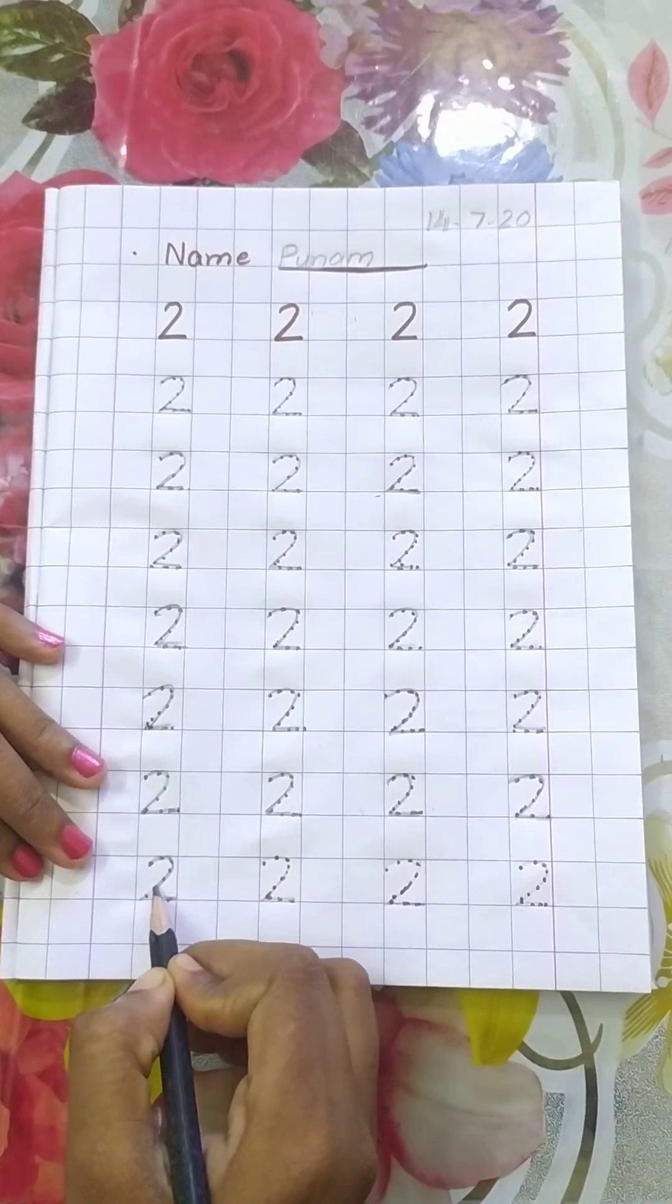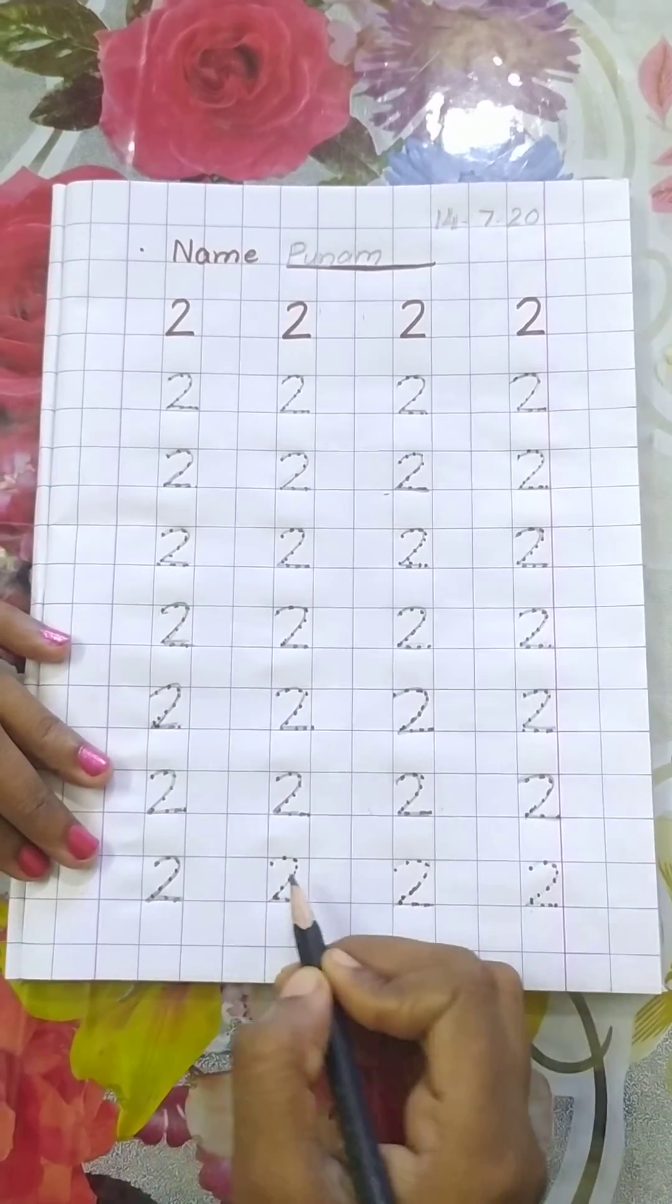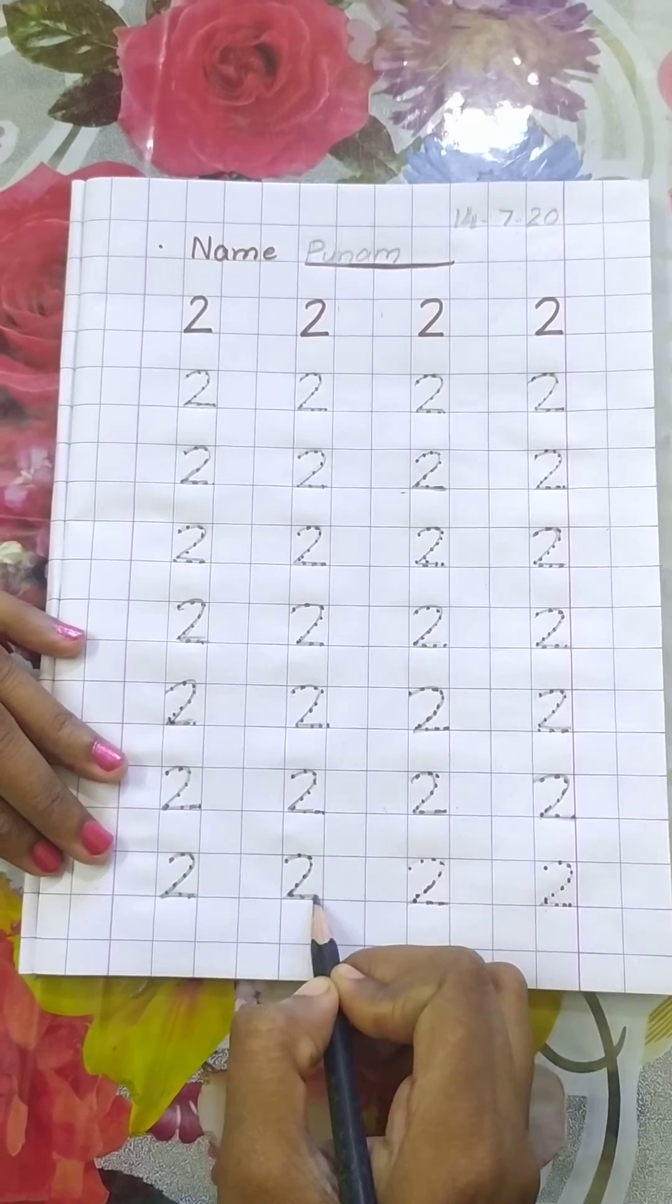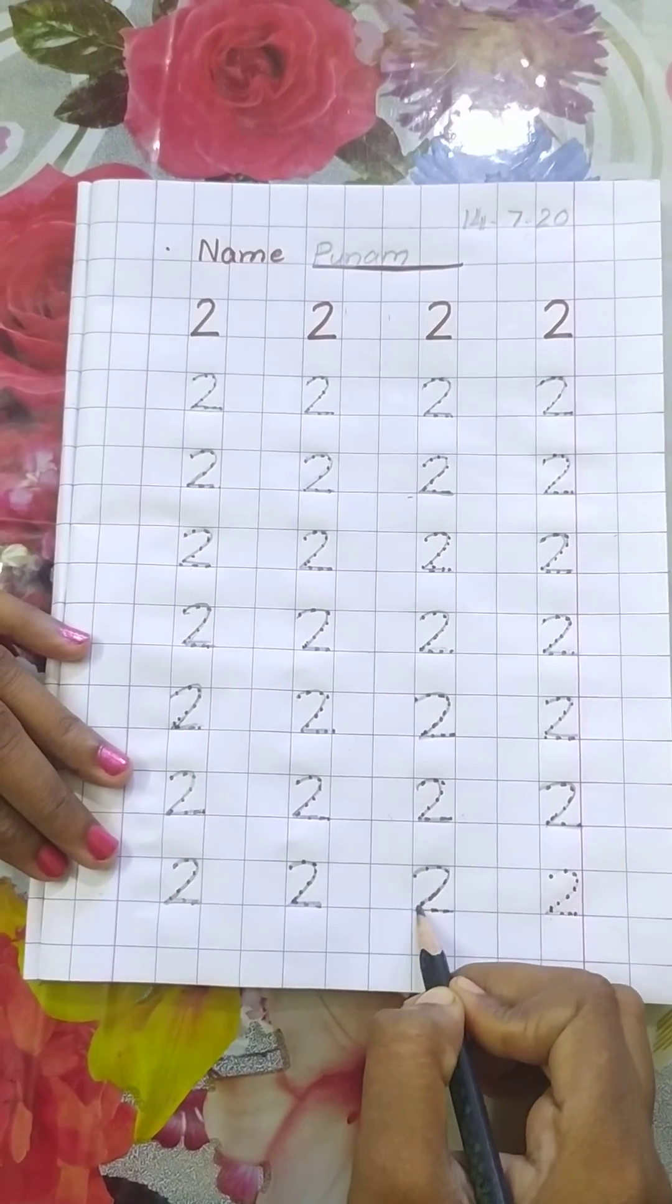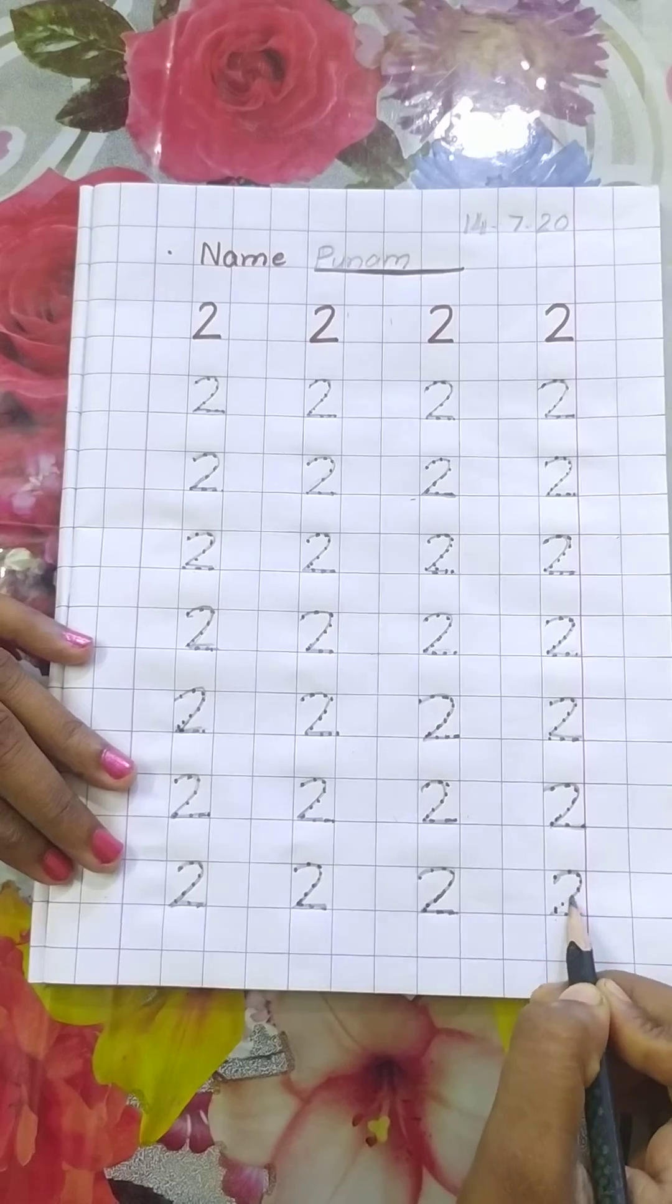Join the dots. Touch the full box and write the number 2.